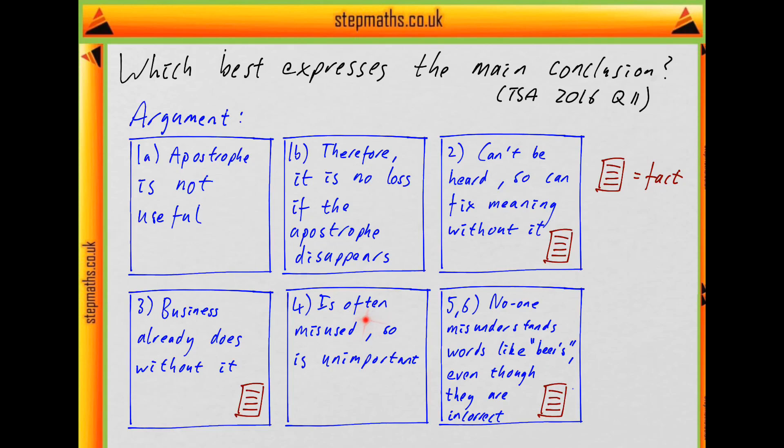It says the apostrophe is also widely misused, which is another measure of its unimportance. They're saying it's misused, so it's unimportant. Then they flesh that out with examples.